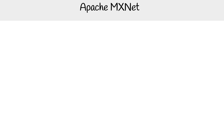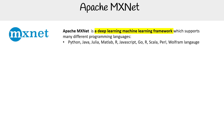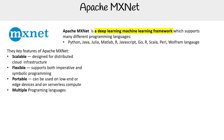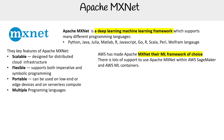Let's take a look at Apache MXNet in a little more detail, because this is the framework that AWS wants you to use — whether you want to use it or not is a different story. You'll see it all over their marketing pages. Apache MXNet is a deep learning and machine learning framework which supports many different programming languages. Key features include being scalable, flexible, and portable. AWS has made MXNet their framework of choice, so there's lots of support for it within SageMaker and the AWS ML containers.